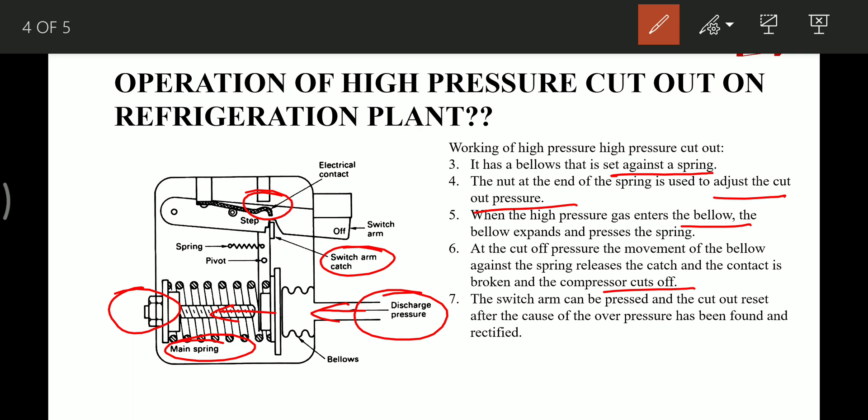The state of this high pressure cutout in this diagram is the activated state, that is why this contact is broken. For resetting, this switch arm has to be pressed in this direction and it will be reset, and this catch arm will be again set on these grooves.